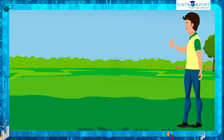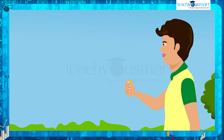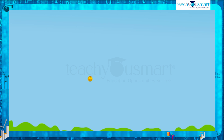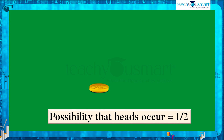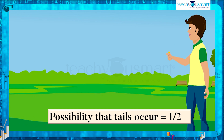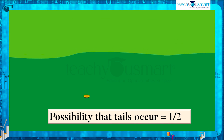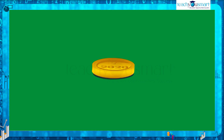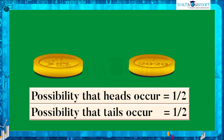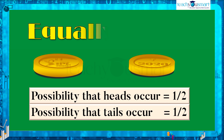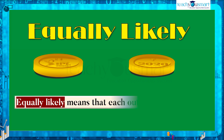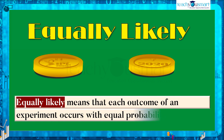When tossing a coin, heads or tails are the possible outcomes — there are two possible outcomes. The possibility that heads turns up is one out of two, and similarly the possibility of tails occurring is also one out of two. Since the possibilities are the same, each outcome has the same chance of occurring — or we can say the different outcomes of the experiment are equally likely. Equally likely means that each outcome of an experiment occurs with equal probability.